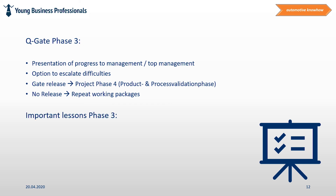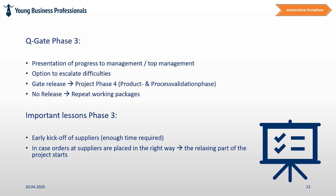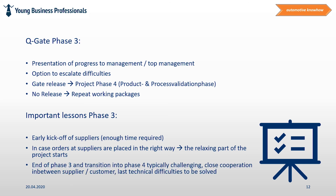What are important learnings of phase 3? Please try to provide as much time as possible to your suppliers to give them the chance to do a proper job with producing the equipment. A result of high quality requires time and resources, and make sure you define the requirements for them as best as possible and in time. In case orders are placed and requirements for suppliers are clear and they are capable, a more relaxing phase of the project starts until the equipment is getting ready. At the end of phase 3 and the transition to phase 4, high attention is required as often a lot of final changes have to be implemented under big time pressure. The better the team was working in phase 1 and 2, the smoother this phase should be running now.